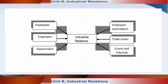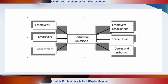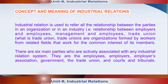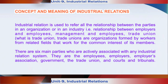As you can see in the diagram, there are six main parties who are actively associated with any industrial relations system. They are the employees, the employers, the employees association, the government, the trade union, and the courts or the tribunals. Industrial relations is used to refer to all the relationships between the parties in an organization or an industry. Trade unions are the organizations formed by the workers from related fields that work for the common interest of their members.